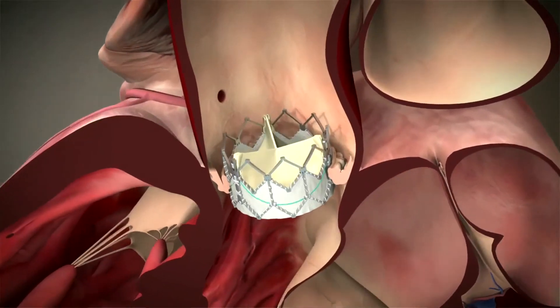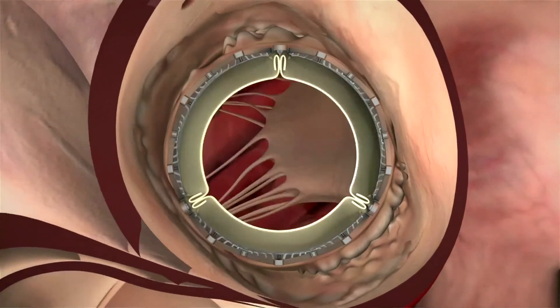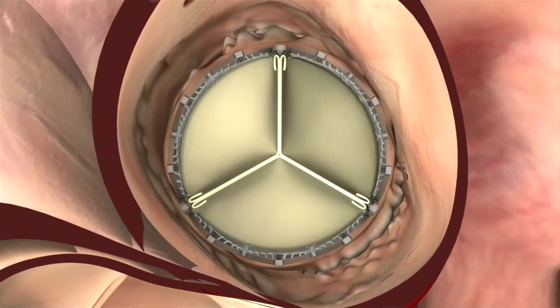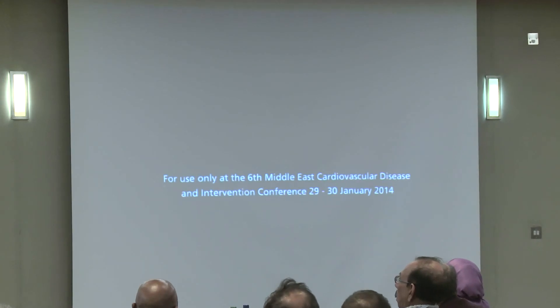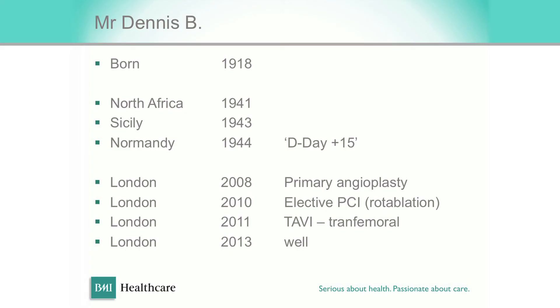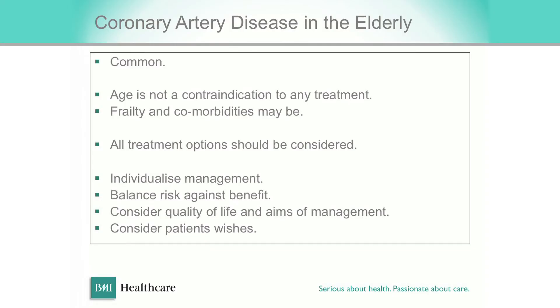This procedure was done under local anaesthetic via the transfemoral artery in this gentleman at age 92 or 93. To summarise his timeline: born 1918, primary angioplasty 2008, elective PCI 2010, TAVI 2011. I last saw him in clinic recently and he is doing absolutely fine.